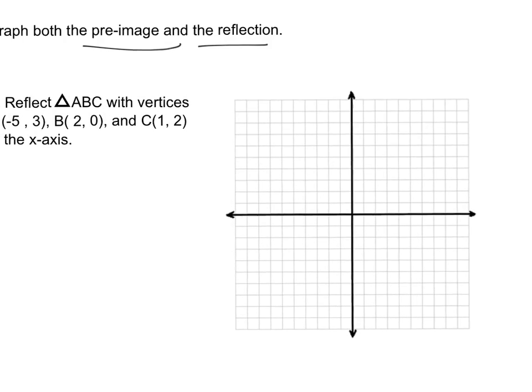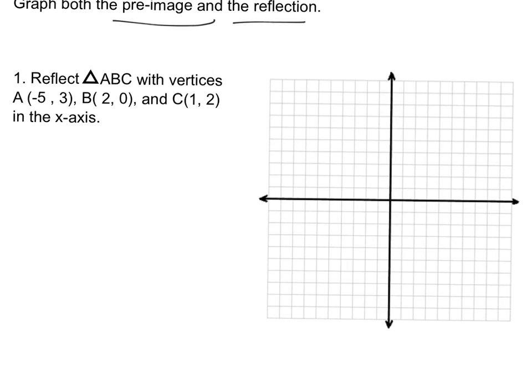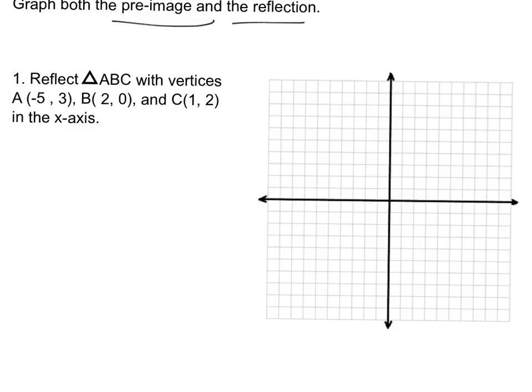So you've got negative 5, 3. That'll be right there, that's your A. 2, 0 is going to be B right there. And C, 1, 2. There is going to be your triangle.